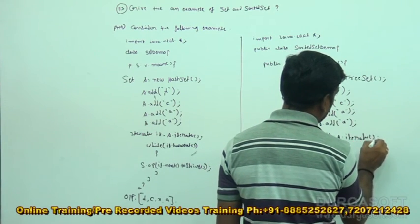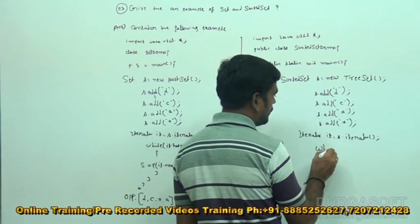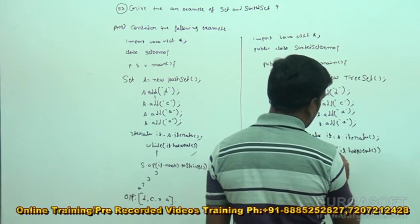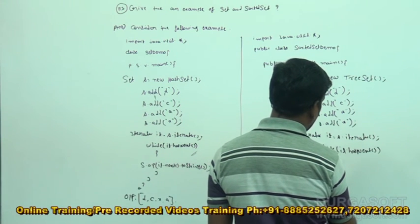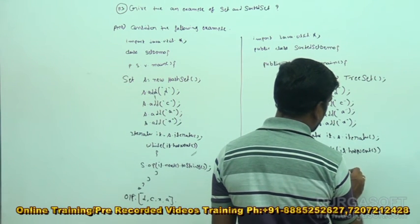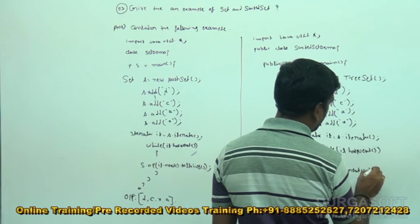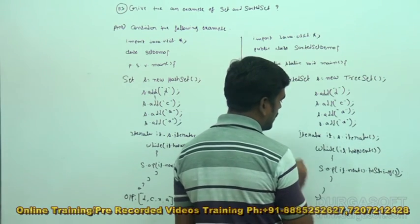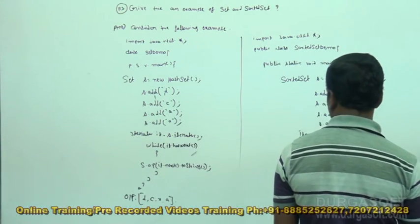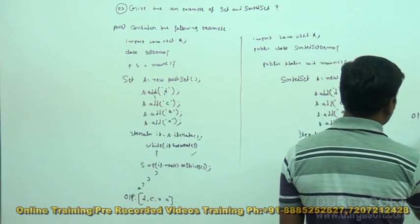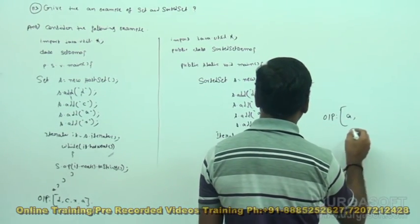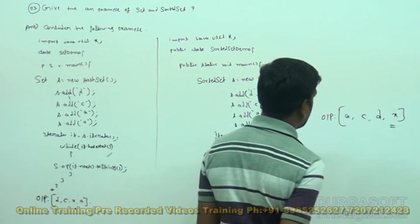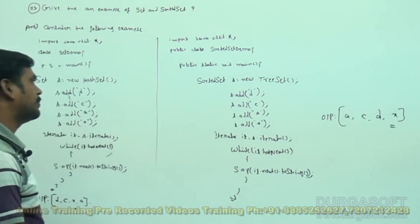After that, while it dot hasNext, then after that system dot out dot println, it dot next dot toString. Then close the method, close the class, and close the main method also. When we are compiling and executing, the output is: first A, then C, then D, then X — like this it is going to display an output in sorted order.